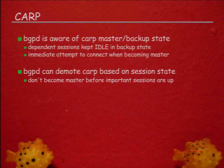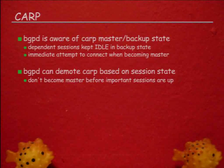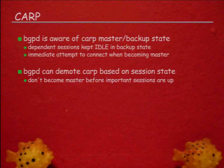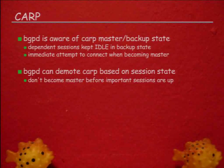CARP: we made BGPD aware of the CARP master/backup state. Sessions marked as depending on a CARP interface are forcefully held in idle state while the CARP interface is not master — they won't even try to reach the neighbor. When the CARP interface becomes master, they immediately try to connect, meaning failover time decreases dramatically. BGPD can also influence the demotion counter in CARP — this ensures a freshly rebooted router doesn't become CARP master before it actually has all the routes.